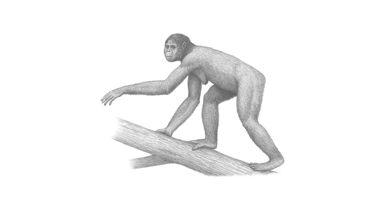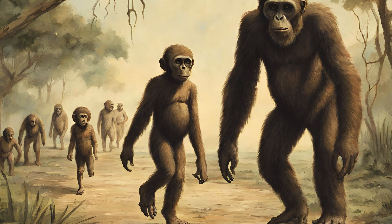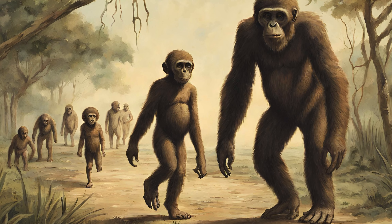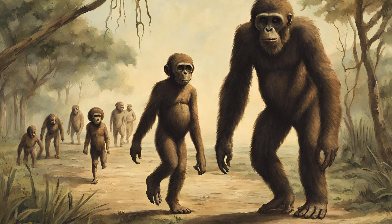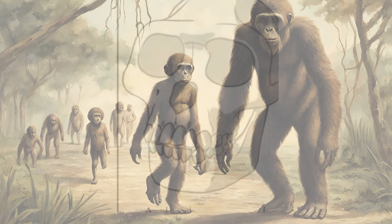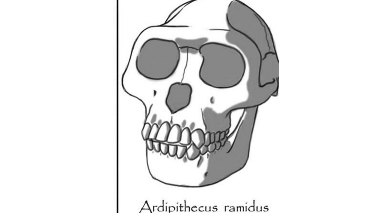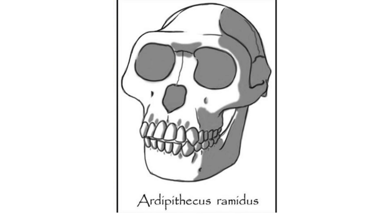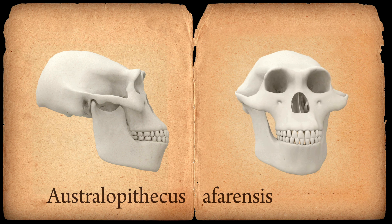Ardipithecus ramidus and Australopithecus, our ancient relatives from about 4.4 to 3 million years ago, had faces that looked different from both modern humans and African great apes. Ardipithecus ramidus had a face with short, light cheekbones like chimpanzees, while Australopithecus afarensis, including the famous Lucy, had broad and robust cheekbones.